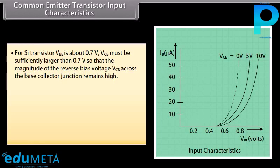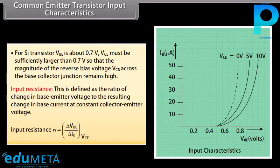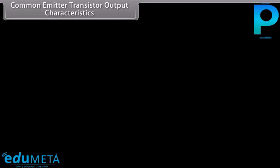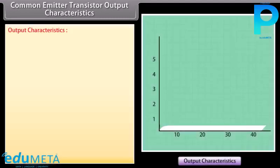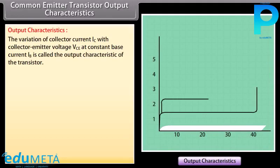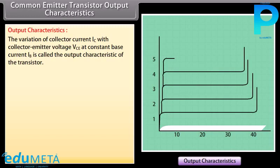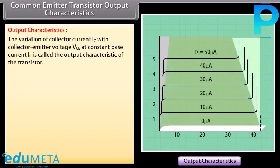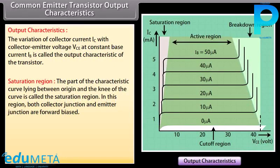VCE must be sufficiently larger than 0.7V so that the magnitude of the reverse bias voltage VCB across the base-collector junction remains high. Input resistance is defined as the ratio of change in base-emitter voltage to the resulting change in base current at constant collector-emitter voltage. The output characteristic shows the variation of collector current IC with collector-emitter voltage VCE at constant base current IB. The part of the characteristic curve between the origin and the knee is called the saturation region.